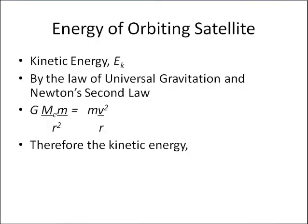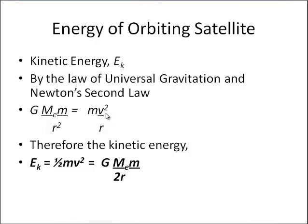From this we can work out kinetic energy. Because we know that kinetic energy equals ½mv², so therefore — I've got mv² already and I'm dividing by 2 — this is going to equal G×M_Earth×m divided by 2r. So now I've got the kinetic energy of an orbiting satellite.